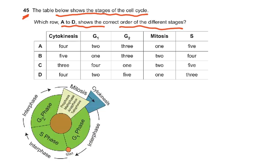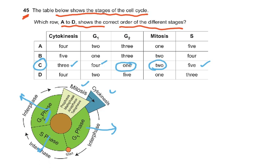Question 45: the table shows the stages of the cell cycle. Which rows A to D show the correct order of the different stages? The order is: G1, then S phase, then G2, then mitosis, then cytokinesis. If you start from G2: G2, mitosis, cytokinesis, G1, S phase. The answer is C — please revise the cell cycle and know which order the stages come in, because they will confuse you. That completes this video on the MCQs. Wish you all the best of luck, and thank you very much.